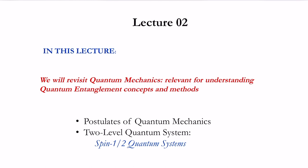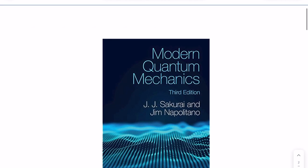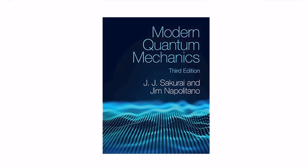In this lecture we will revisit the fundamentals of quantum mechanics that are relevant and necessary for understanding quantum entanglement and its measures. We'll start by discussing the postulates of quantum mechanics, followed by a discussion on two-level quantum systems, specifically the spin of quantum systems. This particular lecture is based on the first chapter of the classic book called Modern Quantum Mechanics by J.J. Sakurai and J. Napolitano.